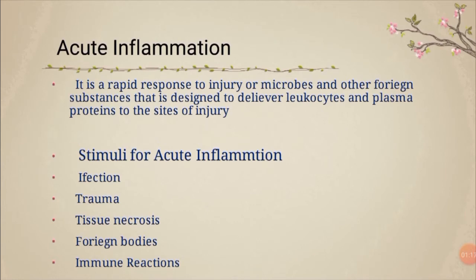Acute inflammation is a rapid response to injury or microbes and other foreign substances, designed to deliver leukocytes and plasma proteins to the sites of injury. The stimuli for acute inflammation include infection — which might be bacterial, fungal, parasitic, or any other infection — as well as trauma, which may be blunt, penetrating, thermal (like burns), or radiation, and toxicity.